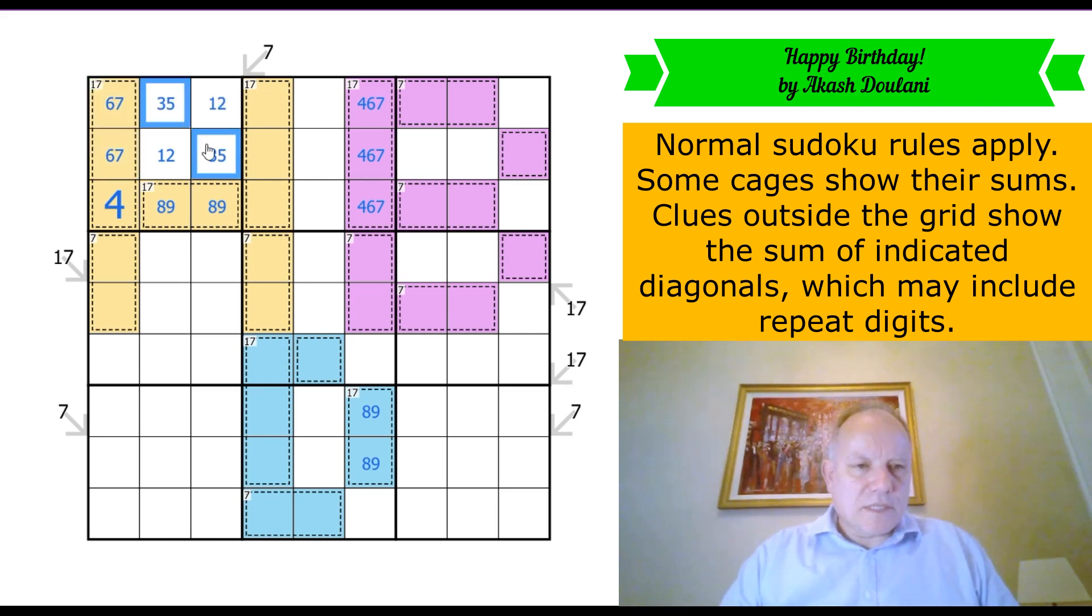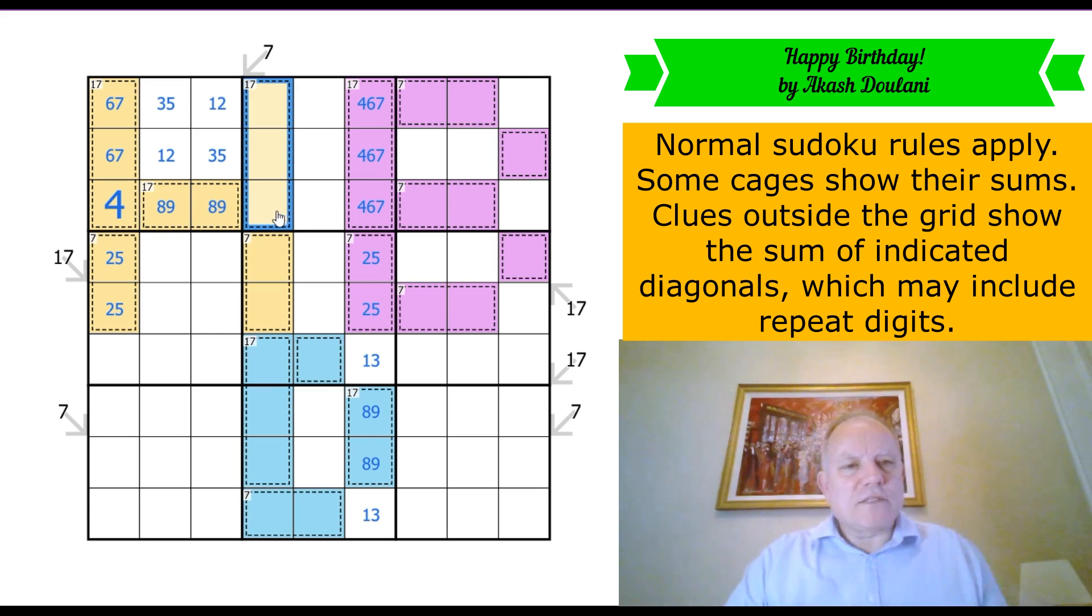So this 7 clue is a 1-2-4, and suddenly we've got a number in the grid. 3 and 5 for the rest of the box. Now this 7 cage must be 5 and 2 because it can no longer be 6 and 1 or 4 and 3. This one the same. And therefore 1 and 3 to fill the column. Now do we know about this 17 cage? I think we do. It can't have both a 9 and 8 in it because that would already add up to 17. I think it must have 1 because otherwise the highest numbers are 5, 3, and 2. So it's got 1 of 9 or 8 in.